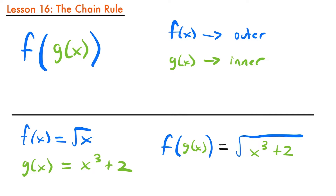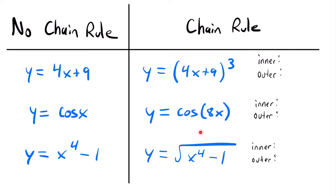When we have composite functions like this and we want to take the derivative of them, we are going to have to use the chain rule. Here I have some side-by-side functions to help us see when we would use the chain rule versus not. On the left side are functions that do not require the chain rule, and on the right side are functions that will require it. For example, y equals 4x plus 9 doesn't need the chain rule, but y equals the quantity 4x plus 9 cubed does, because it's a composite function where the inner function is 4x plus 9 and the outer function is x cubed.